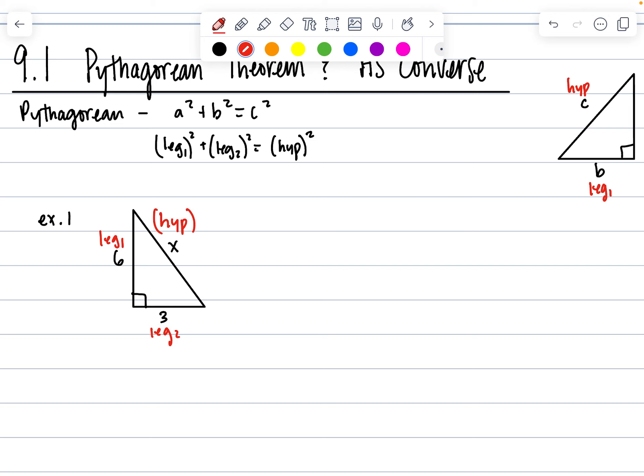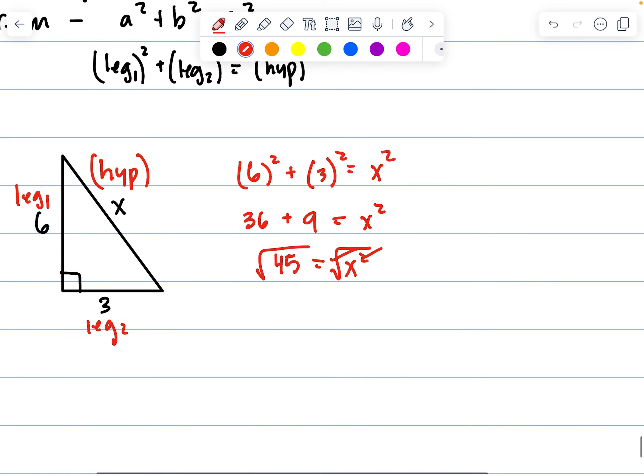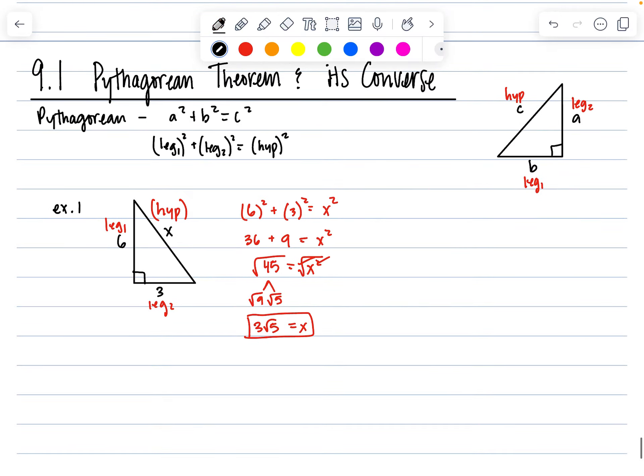We have leg one squared, six squared, plus three squared is equal to in this case x squared because that's our hypotenuse. Six squared is 36, three squared is 9, is equal to x squared. 36 plus 9 is 45 is equal to x squared. Now we actually need to square root both sides and simplify the radical. This breaks down to root 9 and root 5, so square root of 9 is 3, square root of 5 stays itself. So x in this particular case is equal to three root five. We ignore the negative version because we know that lengths cannot be negative.